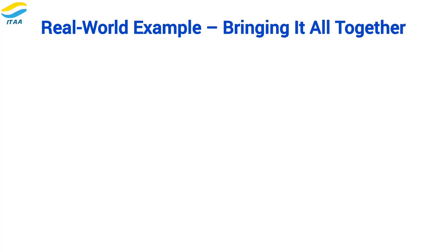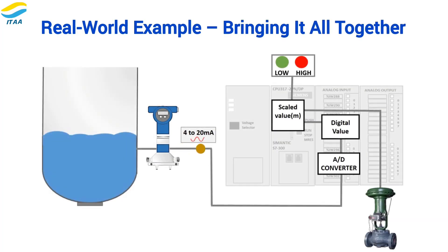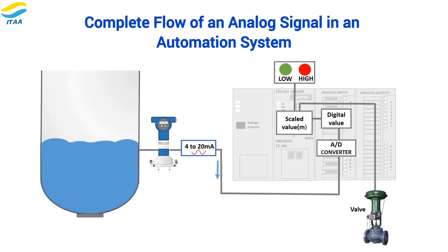Let's put it all together with a quick example. The transmitter in the tank sends a 4 to 20 milliamp signal representing the tank level. The PLC's analog input module reads the signal and converts it into a raw digital value through the ADC. The PLC scales this raw value to an engineering unit like meters so we can read the exact tank level. If the level is too high or too low, the PLC triggers alarms to alert us and keep the system safe. The PLC then sends a control signal via the output card to a valve — our final control element — to adjust the tank level as needed. That's the complete journey of an analog signal in automation, from raw values all the way through to control actions.